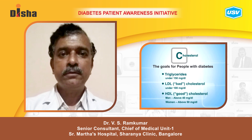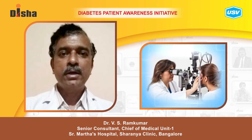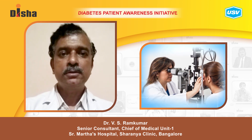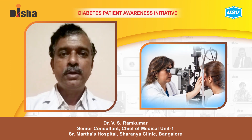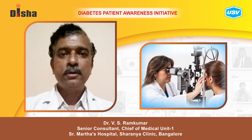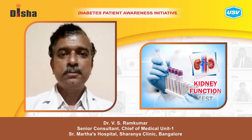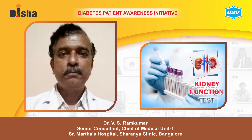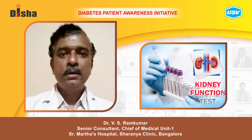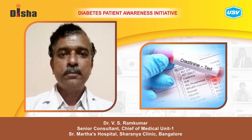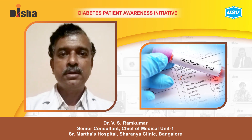The blood cholesterol is also important, and an LDL level below 70 is recommended. Periodic eye checkups are recommended at least yearly to detect early retinopathy. The presence of kidney disease also has to be evaluated by doing blood urea and serum creatinine levels and urine protein estimation at least yearly.